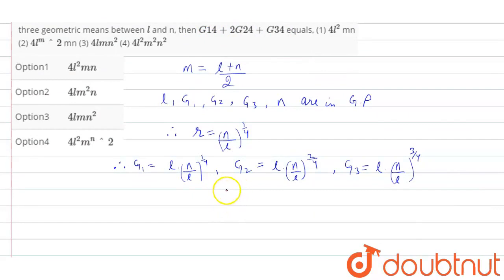Now, we have to calculate g1 to the power 4 plus 2 g2 to the power 4 plus g3 to the power 4, which equals l to the power 4 into n by l whole square plus g3 is l to the power 4 into n by l whole cube.